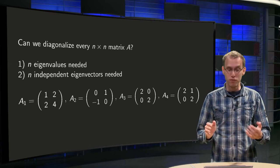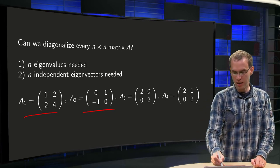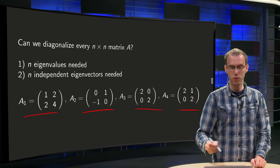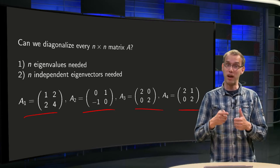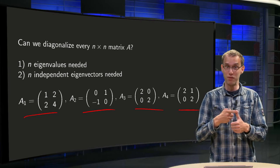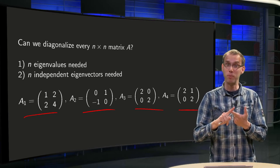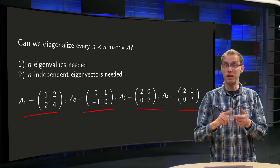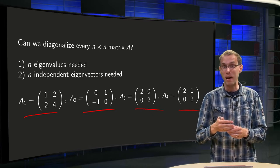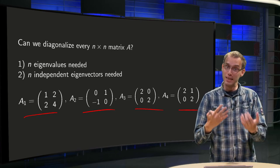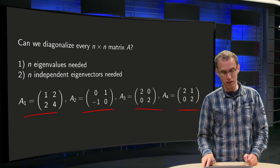Let's look at four examples for matrices A1, A2, A3, and A4. What do we need? We need to make D, so we need to have enough eigenvalues for our matrix D. And we need to make an invertible matrix P. P has to be invertible, so its columns need to be independent — so we need independent eigenvectors. Let's see what happens in those four examples.